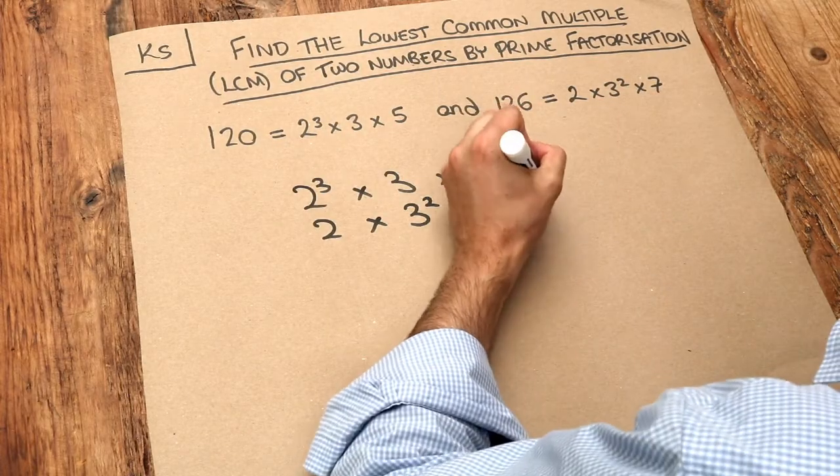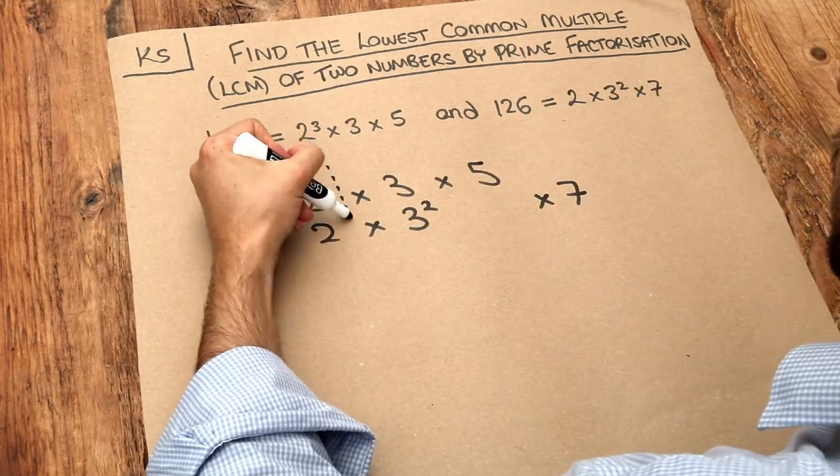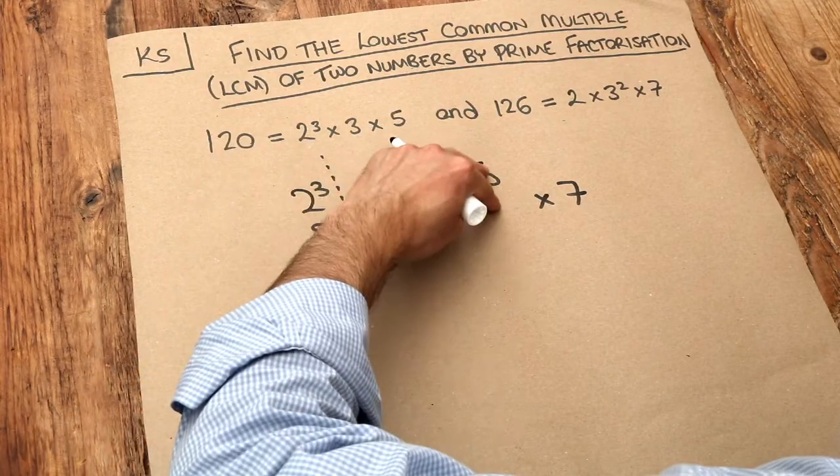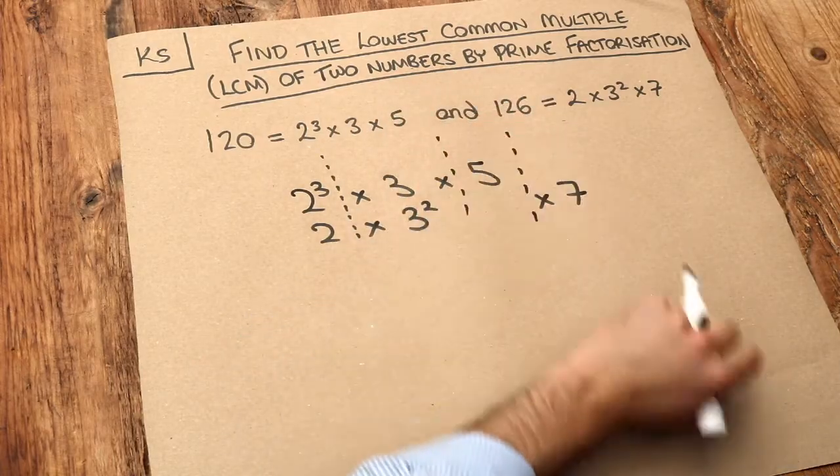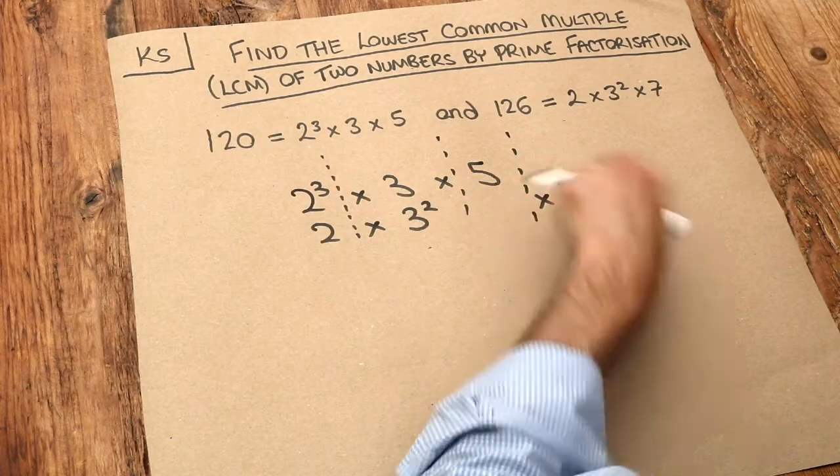Now what you should do is put the 7 in a column to itself because we want to make sure each of these columns involves the same prime factor. So this is your 2 column, this is your 3 column, this is your 5 column, and this is your 7 column. And if this first number doesn't have a 7 in the prime factorization then just leave it blank.